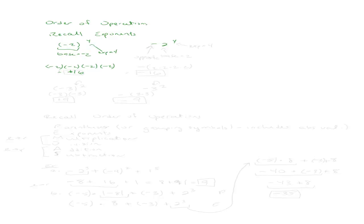The problem on the right is a little different because our base here is 2, not negative 2. The exponent is 4, and the negative out in front really just means the opposite. So we're looking for the opposite of 2 times itself 4 times — that's the opposite of 16, which is negative 16. Notice how these two similar-looking problems give different answers: one gives positive 16, the other negative 16.